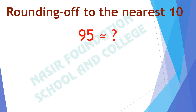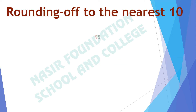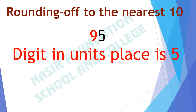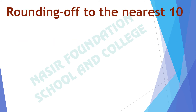Next number: 95. 95 is between 90 and 100. We draw the number line from 90 to 100. The digit in its unit place is 5, and 5 is equal to 5. On the number line from 90 to 100, we can see that 95 lies nearer to 100. Therefore, 95 is nearly equal to 100.